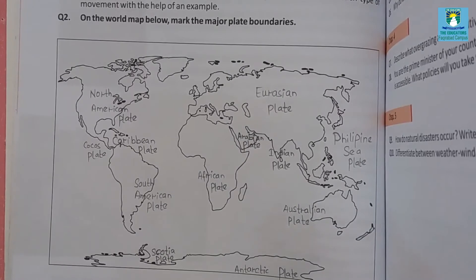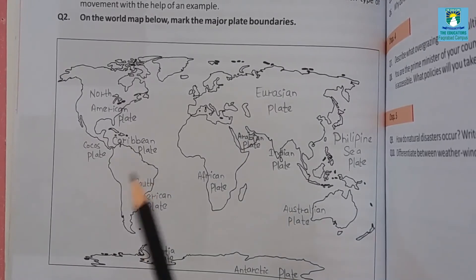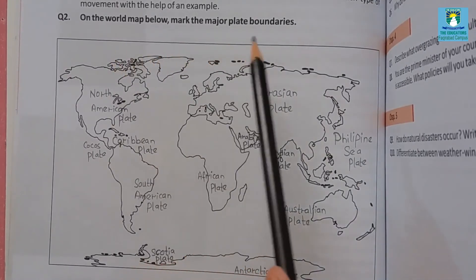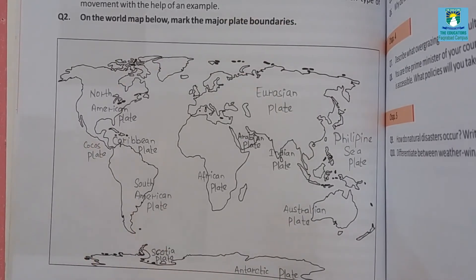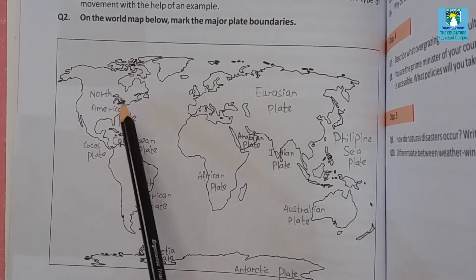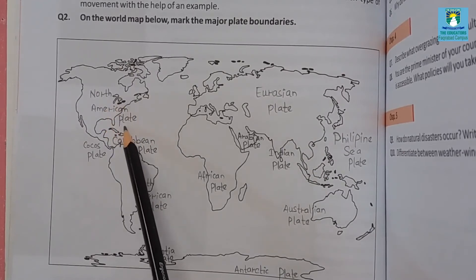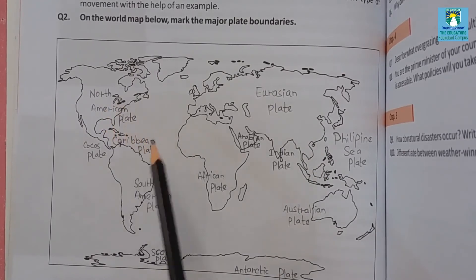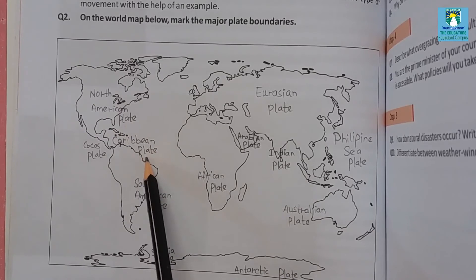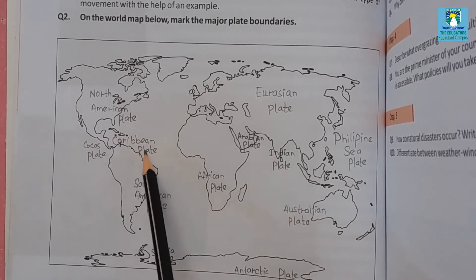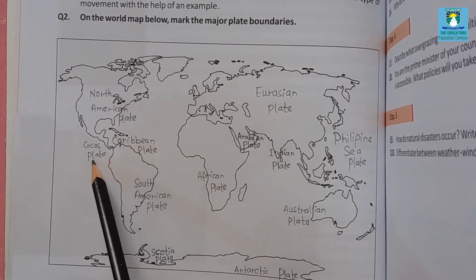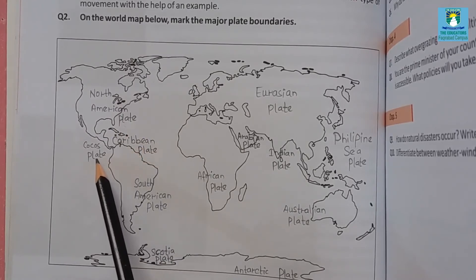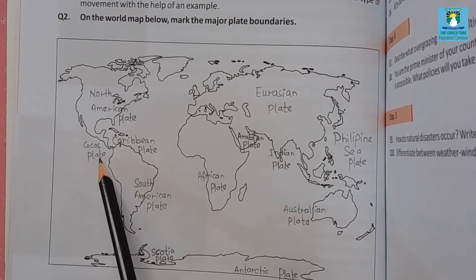Now take out page number 36 of your book. The second question is: on the world map below, mark the major plate boundaries. We have to mark only the major boundaries. This is the North American plate. Below this plate is the Caribbean plate. Adjacent to this is the Cocos plate — we haven't studied all of the plates, but we have to mention them because these are the major plates on the world map.